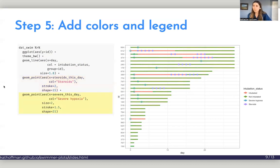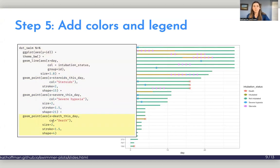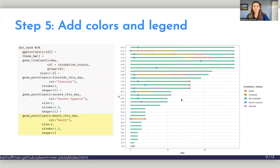We'll do the same thing for hypoxia, say we want it to be called severe hypoxia, we see it shows up on the graph. And for death, same thing, it's not on the graph.